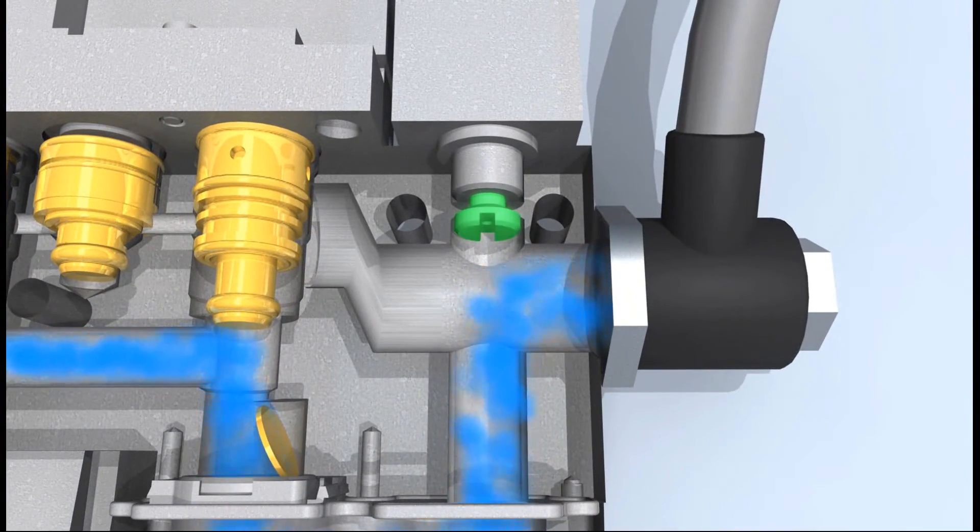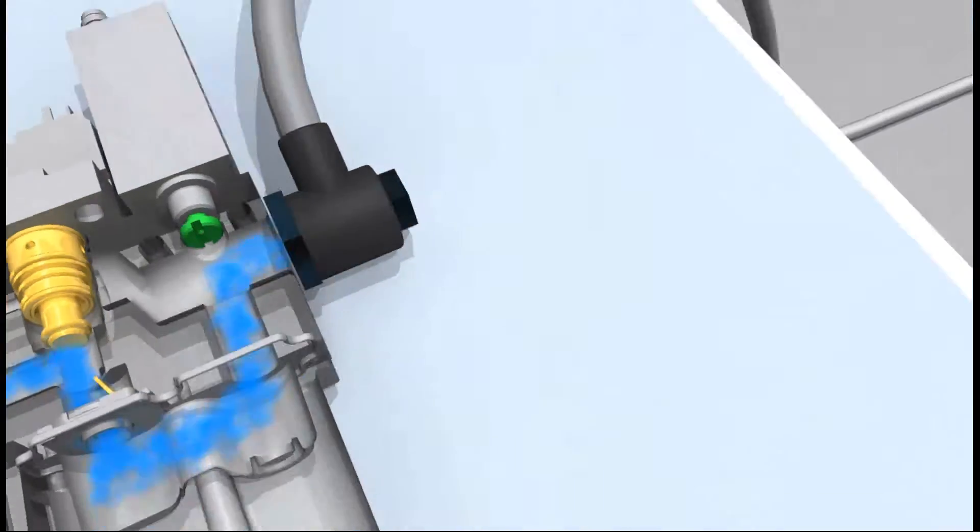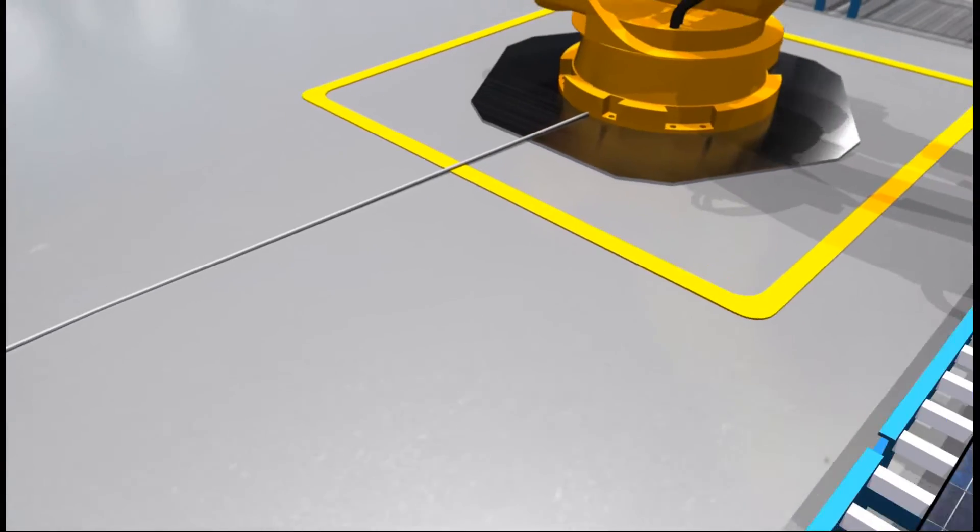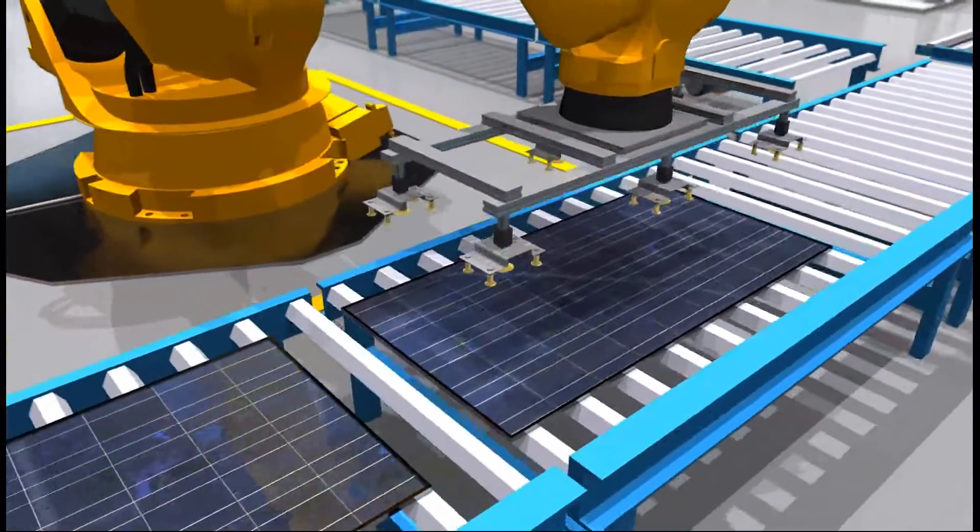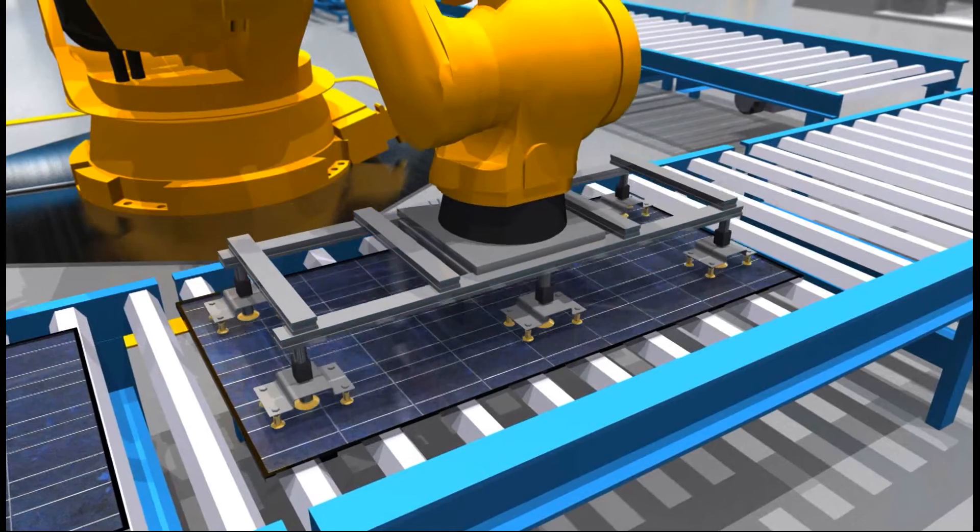A sensor continuously measures the pressure. As soon as the necessary underpressure is reached, the vacuum can grip a component part, such as a solar cell.